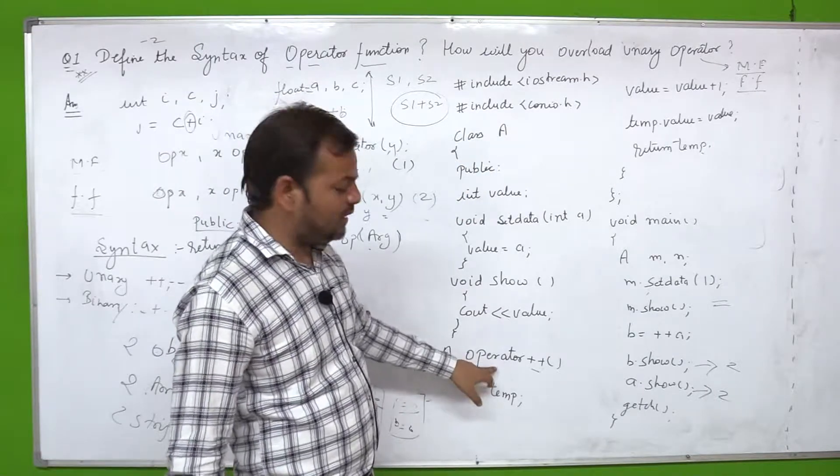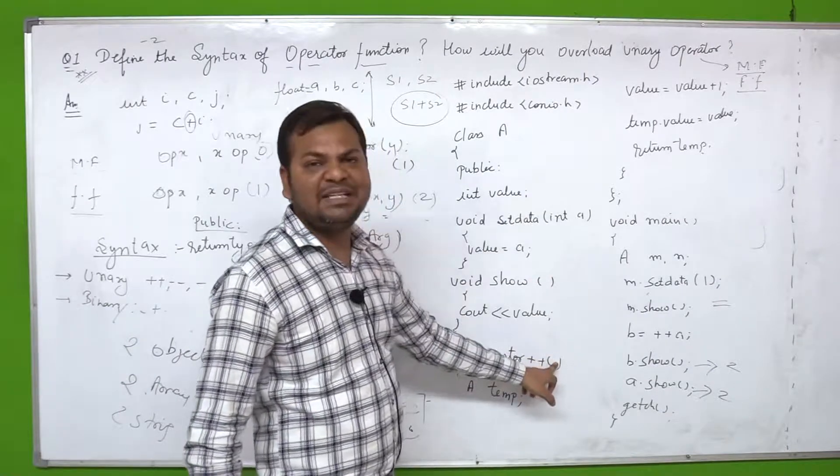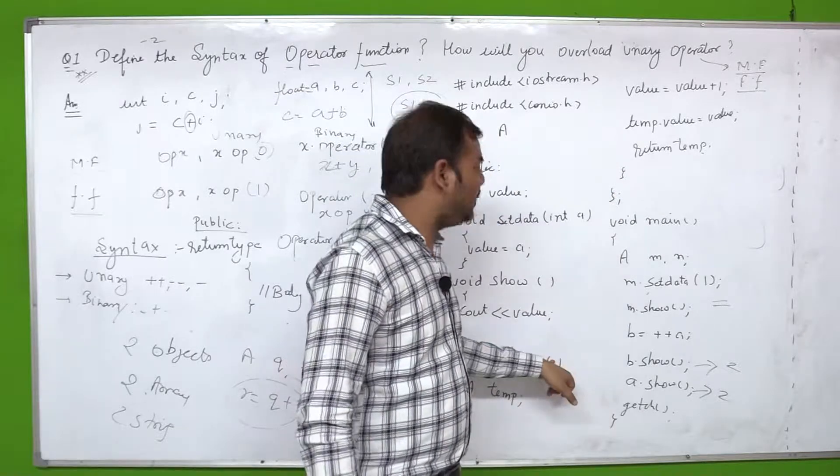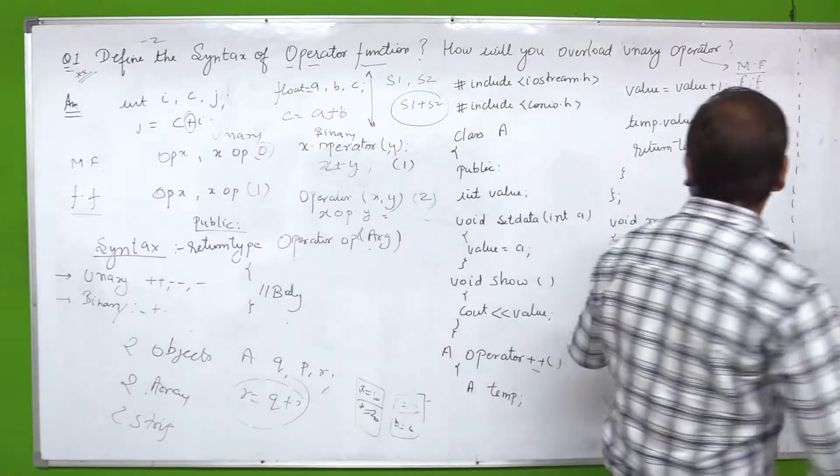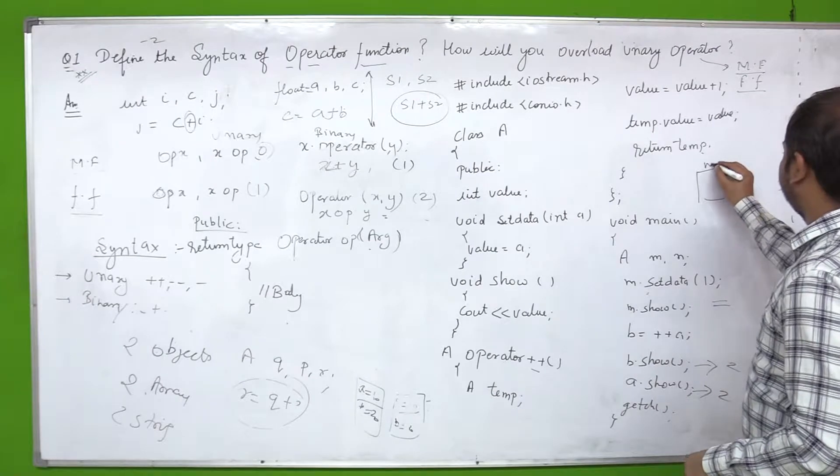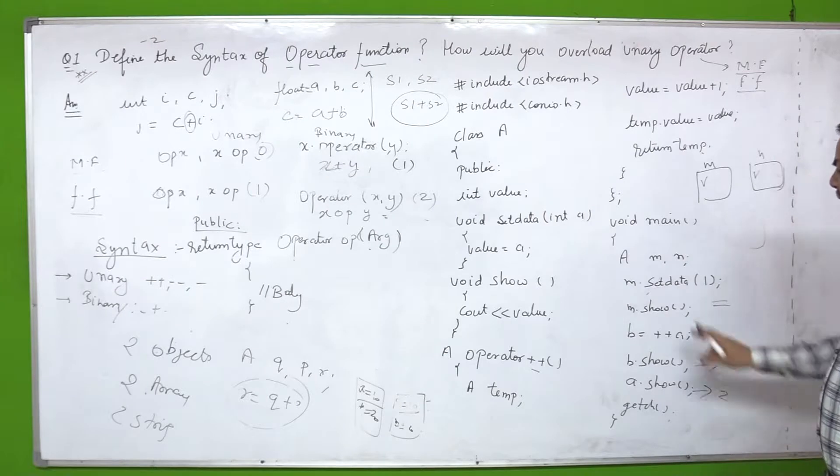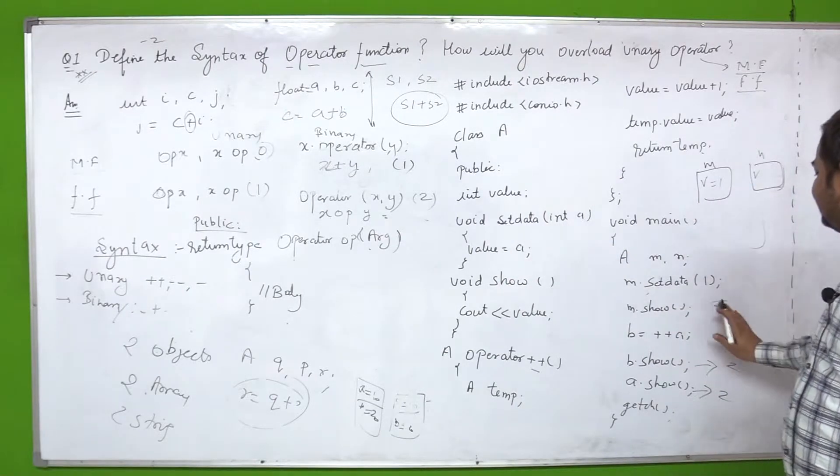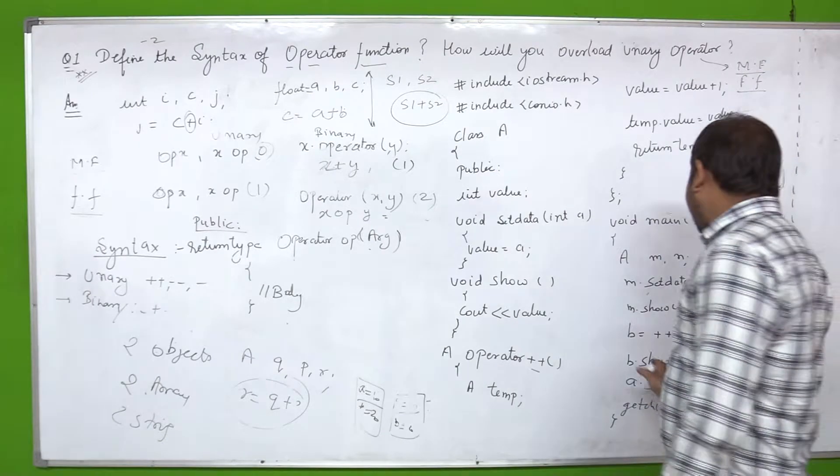Then operator keyword, plus plus overloading I am doing here. Zero argument here - understand that member function through. If I have one argument passed, then friend function through. Here I have two objects M and N. This value will be set. M set data call with value 1. Here show value M then 1, here 2.